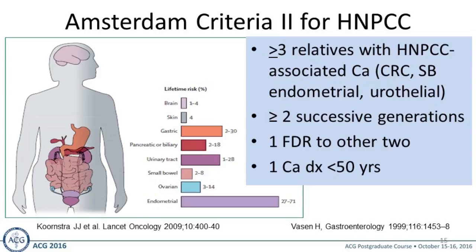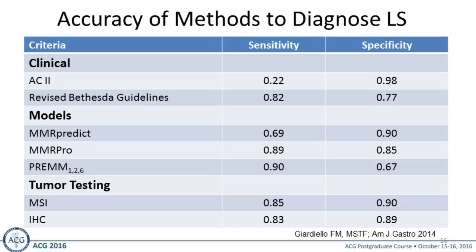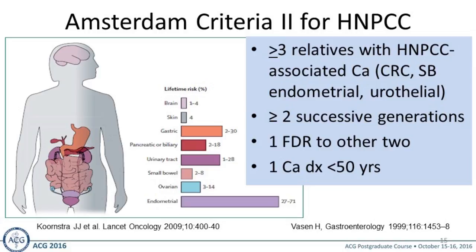The other organs that can be affected in Lynch syndrome include brain, skin, stomach, pancreatic biliary tract, urothelial tract, small bowel, and endometrial and ovarian cancer. The Amsterdam Criteria 2 is also 3-2-1: three or more relatives with colonic or extra-colonic Lynch-associated cancers, two or more successive generations, and one first-degree relative linking the others, with cancer diagnosed under age 50.